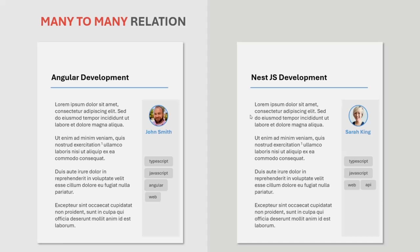This was a brief overview of each type of relation we can have in a relational database. We will learn more about these relations in detail and how to implement them in our coming lectures. We also discussed the advantages of having a relation between two tables. If you have any questions from this lecture, feel free to ask. Thank you for listening and have a great day.